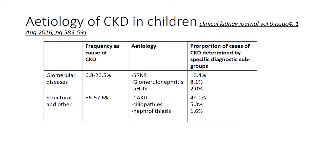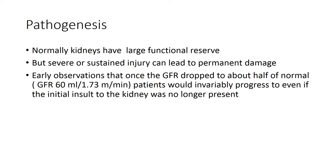As we get into the older age group — preteens and teenagers — we begin to see more glomerular diseases, such as steroid-resistant nephrotic syndrome, atypical hemolytic uremic syndrome, and other glomerulonephritic disorders.